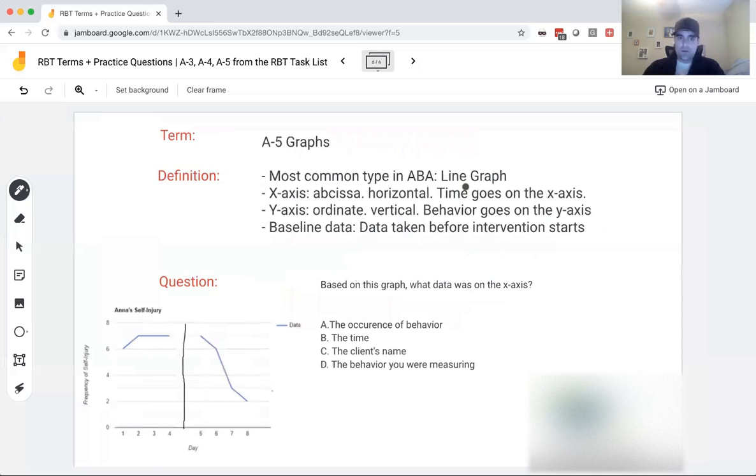Alright, last one, graphs. Again, graphs. People freak out about graphs, but I'm here to tell you, RBT exam is not going to kill you with graphs. They want you to have a very, very, very basic knowledge of a graph and a line graph and what it is. It's all they want. Do not get scared about graphing on the exam, I promise. So let's look at a few standard things you need to know. The most common type of ABA graph is a line graph, which we have down here. You can see why it's a line graph. Your data points are connected. You see the line. That's the most common type in ABA. And as an RBT, that's the most common type you'll use.